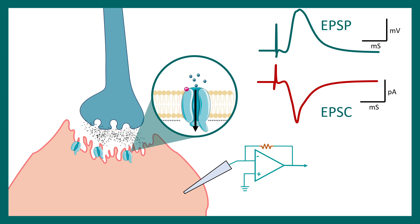It's important to note that post-synaptic potential is not equivalent to an action potential — it is a graded potential. However, the post-synaptic potential does change the membrane voltage and makes it more positive, and if it crosses the action potential threshold, an action potential will fire.